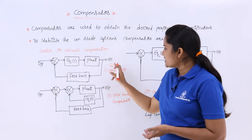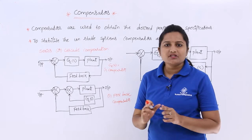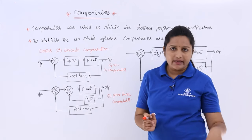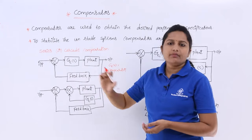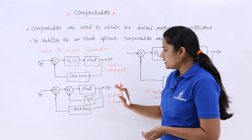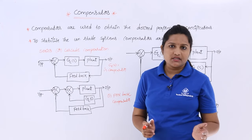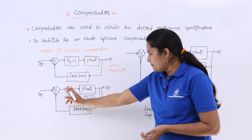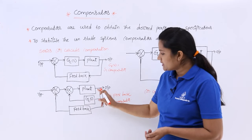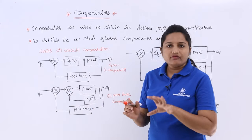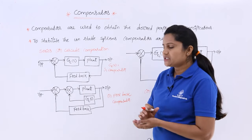Similarly, here where GC(s) is equivalent to the compensator. For example, without this compensator, if that network is an unstable network and you want to make that control system stable, then you need to place a compensator there. Now here I am adding another structure of compensator — we can use the compensator as a feedback network. Here you can see GC(s), meaning the compensator is in feedback with the regular gain. This is called feedback compensation.